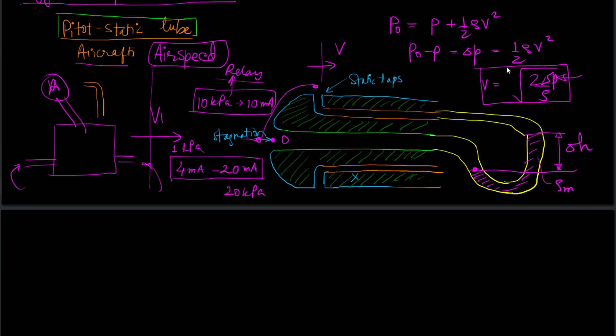With the help of this you can find out the velocity, but look - this velocity is the theoretical velocity, and it is the velocity under the assumption that the velocity goes to zero at the stagnation point in a reversible and adiabatic manner.